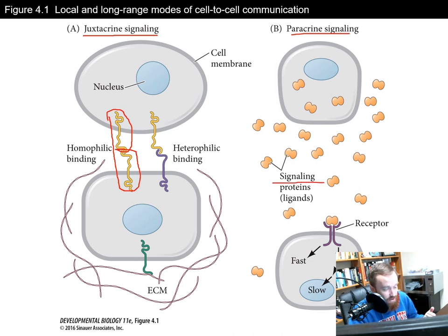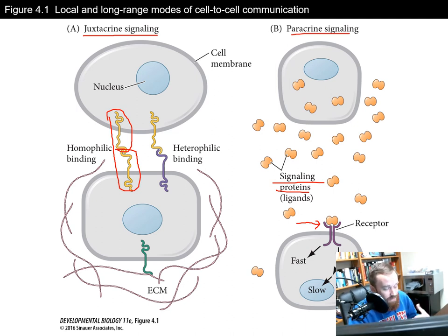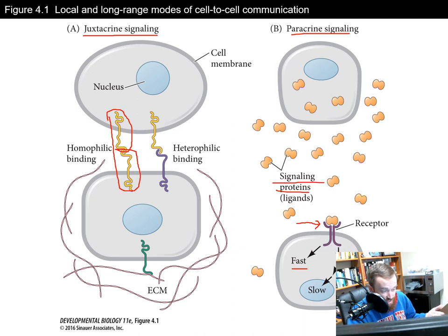In paracrine signaling, we have signaling proteins called ligands that travel between cells and bind to specified receptors specific to their own ligand — a one receptor, one ligand relationship. Responses can be fast, such as a chemical reaction in the cytosol, or slow, such as a cascading pathway leading to changes in gene expression. In juxtacrine signaling, there are two types of binding.